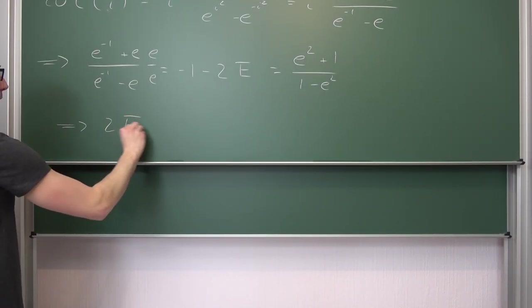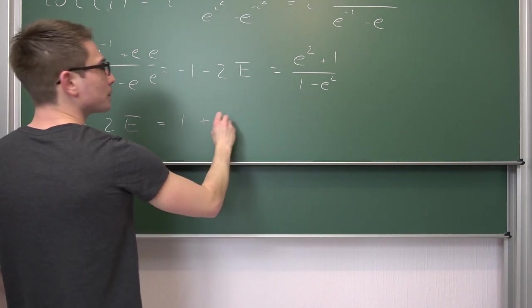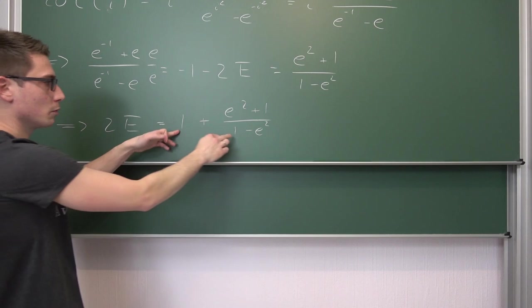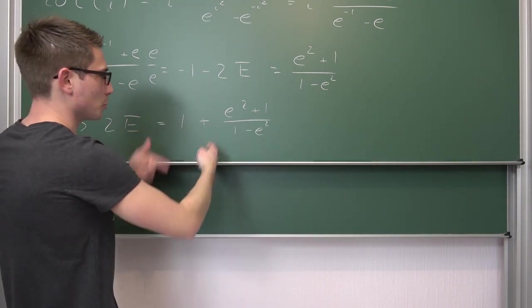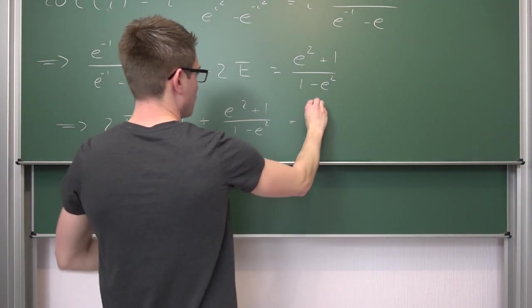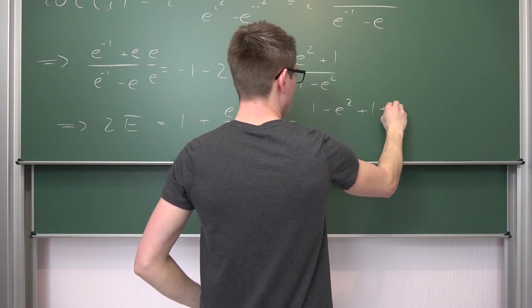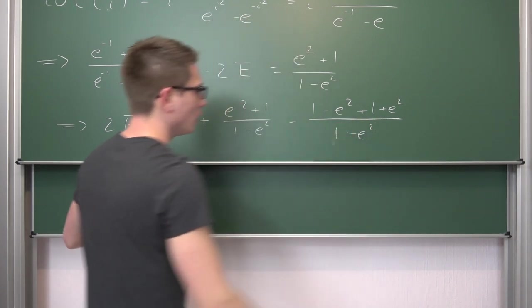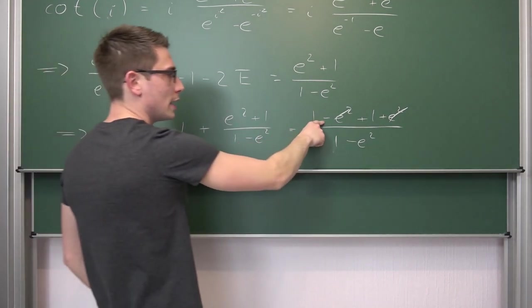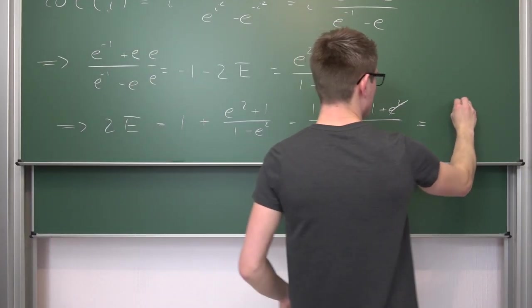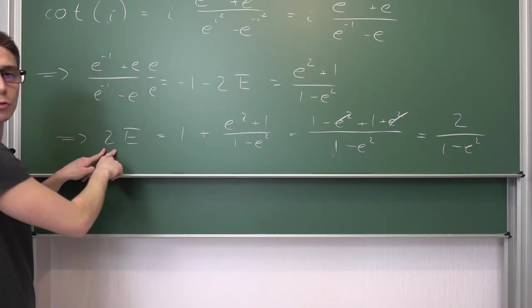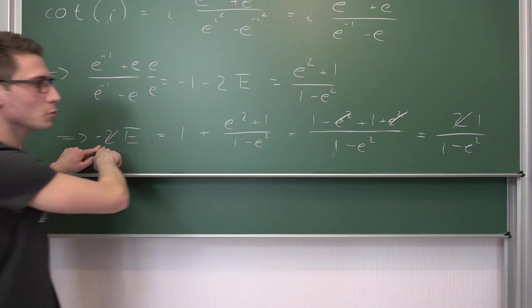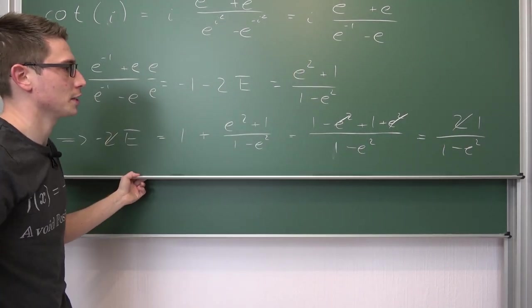And now we can proceed with what I just said we can add 1 on both sides. Meaning overall 2 times S is nothing other than 1 plus e squared plus 1 over 1 minus e squared. Now we can expand the 1 by 1 minus e squared over 1 minus e squared and just add everything together. We are going to get 1 minus e squared plus 1 plus e squared over 1 minus e squared. E squared and e squared is going to cancel out. We are going to have a 2 up here. So this is going to give us 2 over 1 minus e squared. Now we can divide both sides by 2. This is going to cancel out and then we can also, I forgot the negative sign, we can multiply both sides by negative 1 changing around the signs on the denominator. And then we are done.